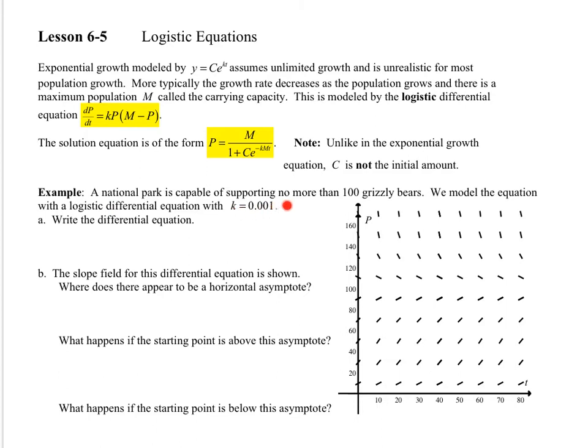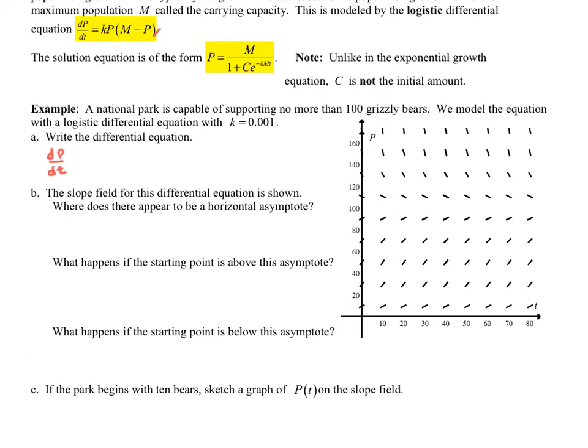For example, a national park is capable of supporting no more than 100 grizzly bears. We model the equation with a logistic differential equation with our constant being 0.001. Write the differential equation. So my rate of change of the population is going to be equal to my k value, which is 0.001, and then I'm going to use the p and then my m. m is 100. So that would be my differential equation modeling this with 100 grizzly bears.